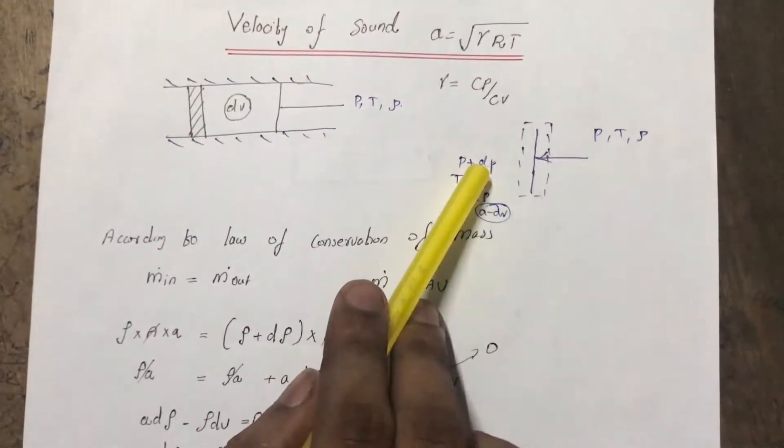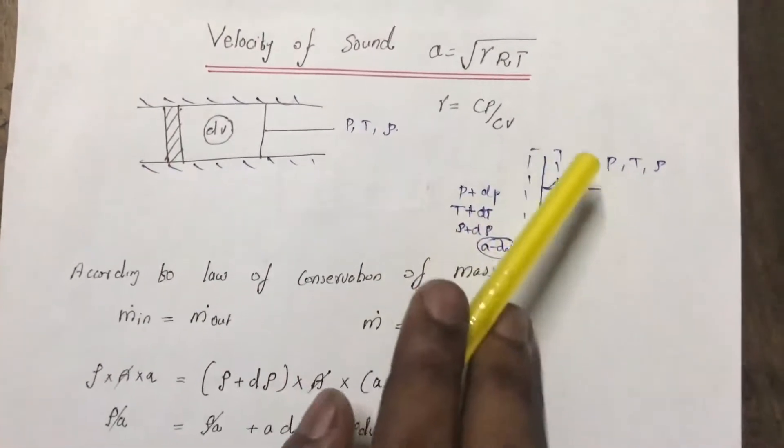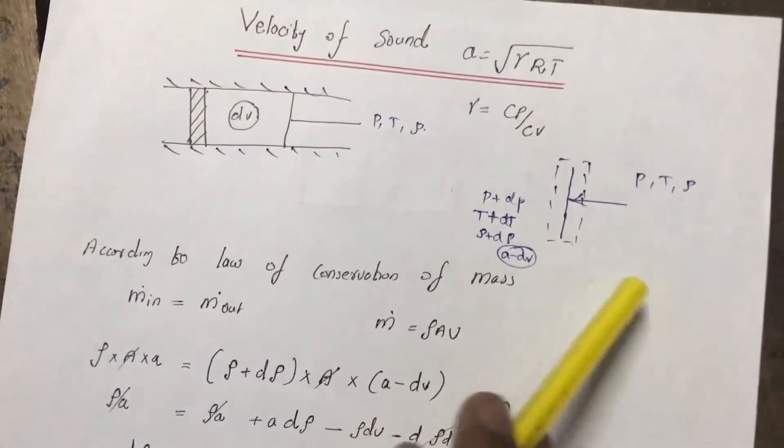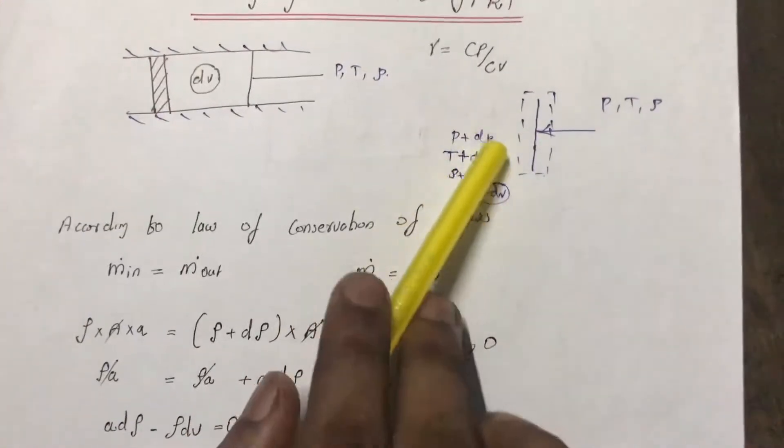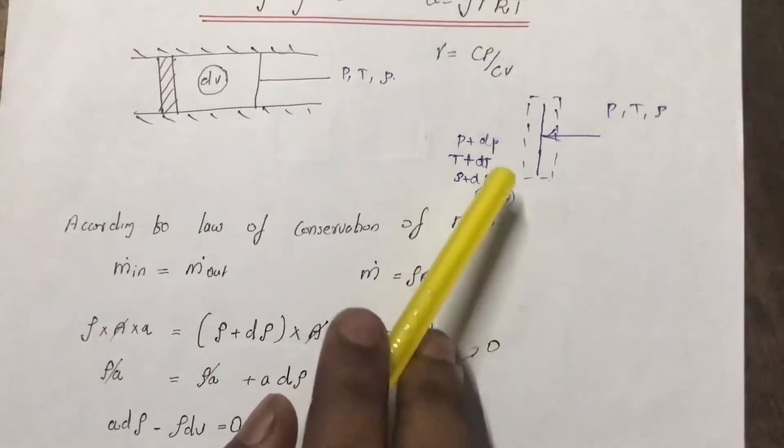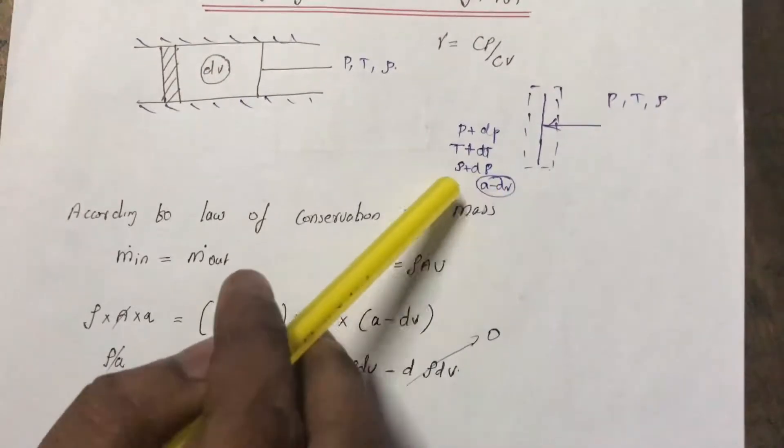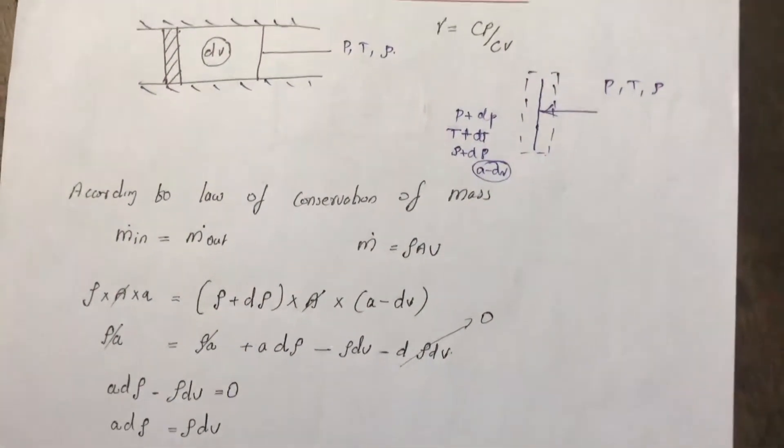Now in order to analyze the pressure wave, consider a controlled volume around the pressure wave and let us assume a steady flow. The velocity changes as a minus dv. As these terms get added up, the small velocity term gets separated from the initial velocity of sound.